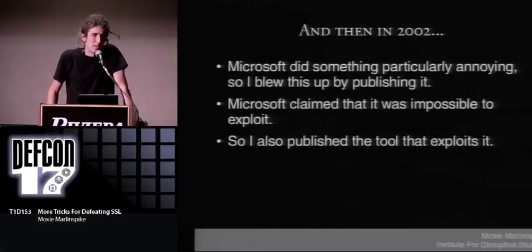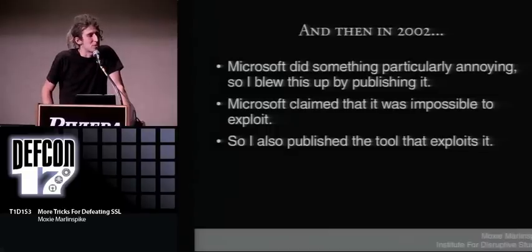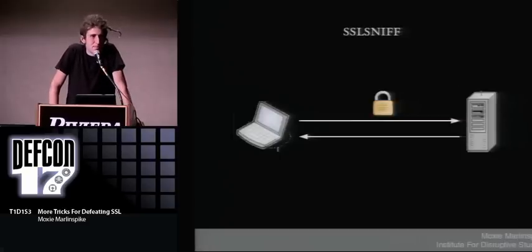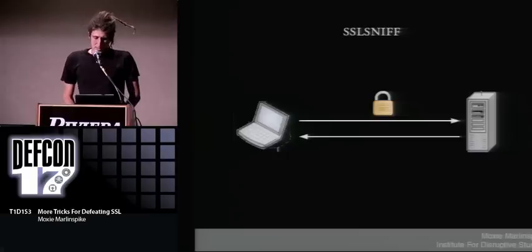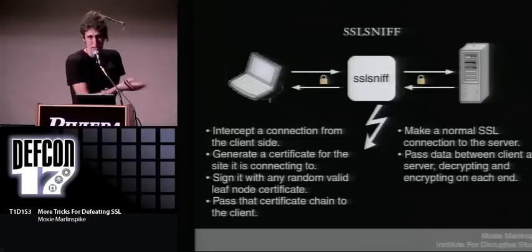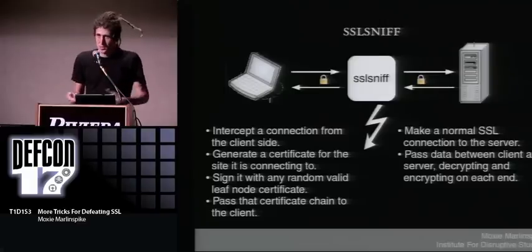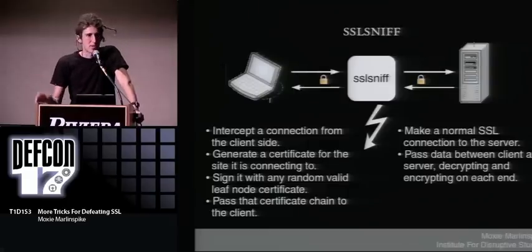Back in 2002, Microsoft did something particularly annoying — they claimed this was a real vulnerability but basically impossible to exploit. So I published the tool that exploits it. That tool is called SSL Sniff. It works like you'd expect: if a client is trying to connect to a server using SSL — say PayPal — SSL Sniff performs a man-in-the-middle attack. It intercepts the client's connection request, generates a certificate for the site on the fly (e.g., paypal.com), signs it with any random leaf node certificate you give it, and passes the whole chain back to the client. Simultaneously on the server side, it makes a normal SSL connection and passes data back and forth. In the middle, the data is in the clear — you can log it, modify it, or do whatever you want.